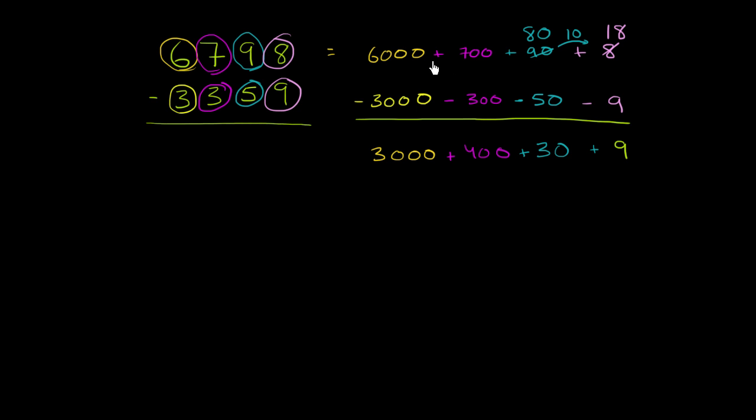Now how would you do it if you didn't want to write it out like this? And this is where you'll see kind of a shorthand notation. This is often called borrowing. So you say, look, I got an 8 in the ones place. I want to take a 10 from this 90. So it's going to become an 80.